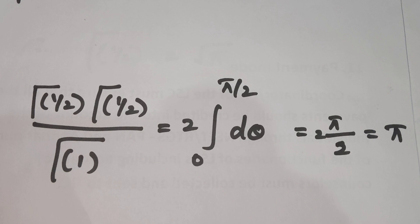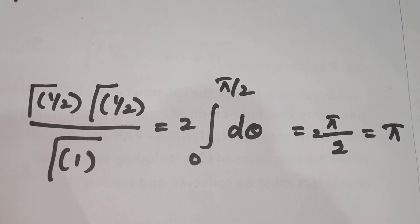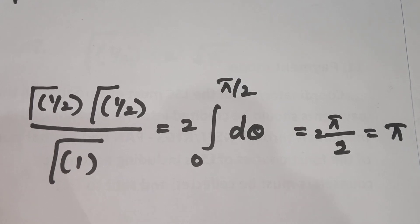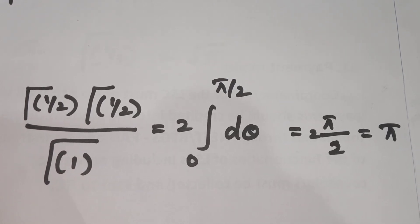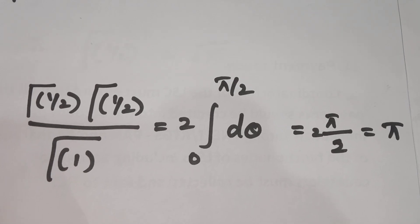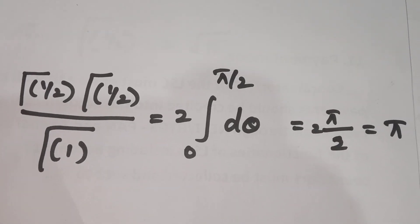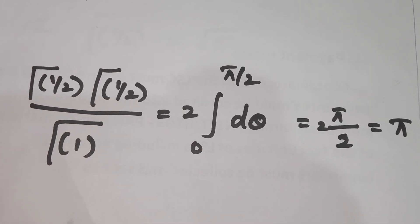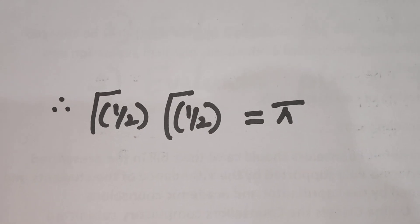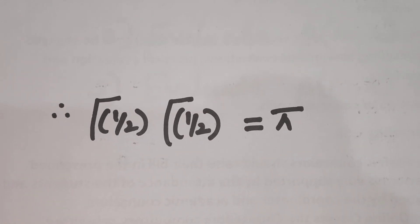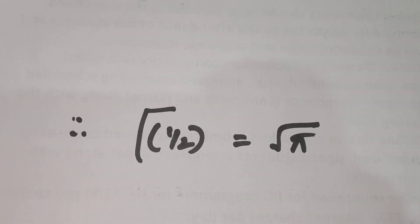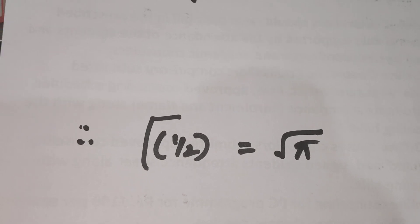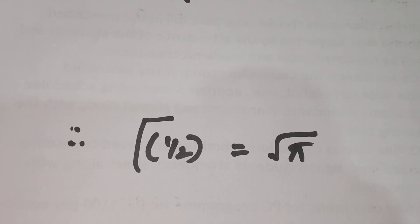Therefore gamma of 1 by 2 into gamma of 1 by 2 divided by gamma of 1 is equal to 2 times integral from 0 to pi by 2 of d theta. Integrating, we get 2 into pi by 2, that is equal to pi. Since gamma of 1 equals 1, this becomes gamma of 1 by 2 into gamma of 1 by 2 equals pi, and therefore gamma of 1 by 2 equals root pi. This is property number 2.